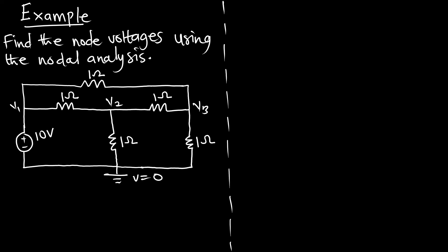Now let's assign the currents. Because this branch already has a voltage source, I'm not going to assign current to it. But the voltage source will produce current that moves in both directions — I'll call them I1 and I2. I1 is going to split itself into I3 and I4. Then I4 is going to split and we get I5. Here we have each of the resistors to be 1 ohm.